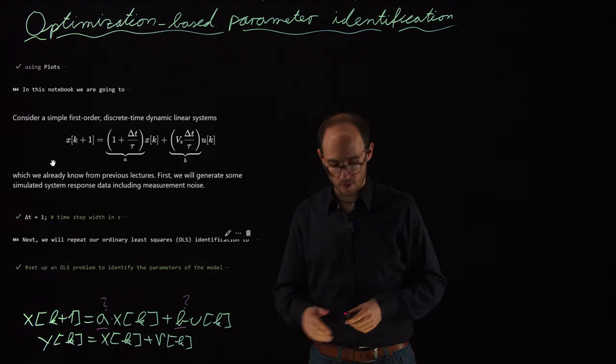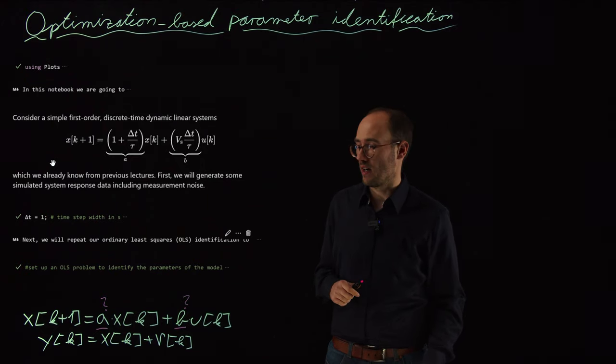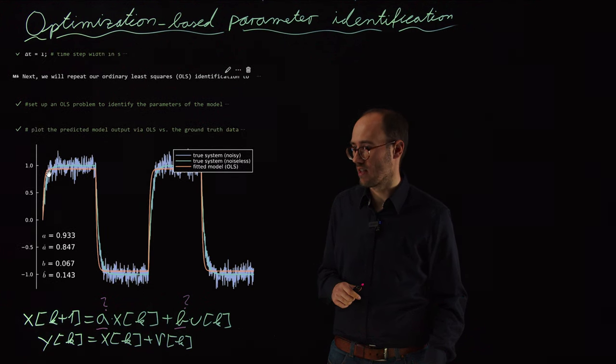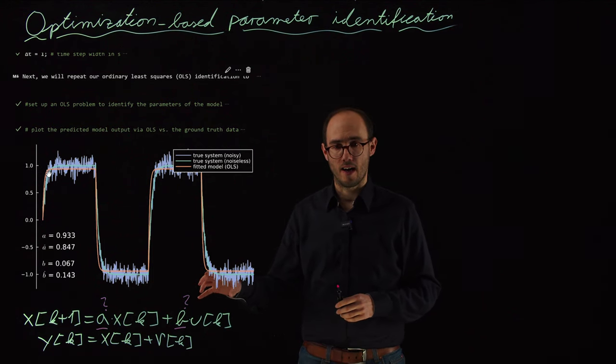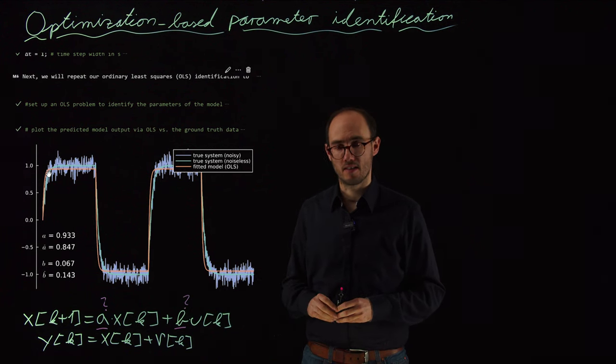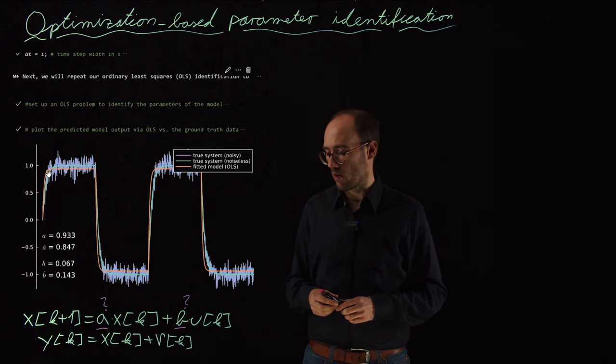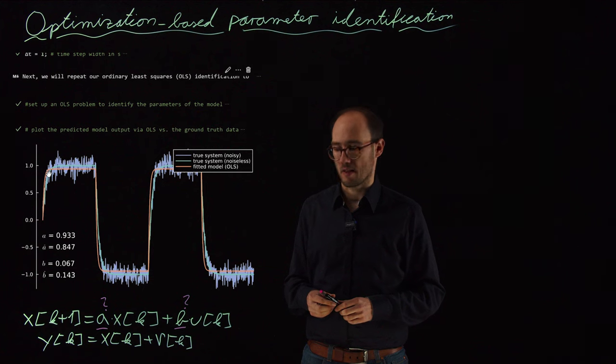For that, I would just give you a brief reminder from this notebook which you have already seen before. The key takeaway message of this identification problem when we apply ordinary least squares to this dynamic system is that all our best linear unbiased estimator properties are going down the toilet pipe if we apply it to a dynamic system.